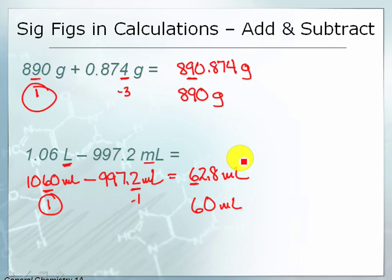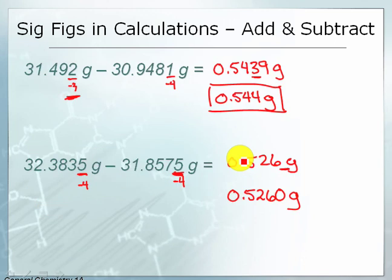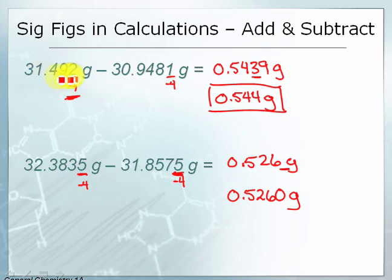So however you go about figuring it out, the big thing to remember in all of these is that the uncertainty in the answer is determined by the largest source of uncertainty going in. The first uncertain digit you come to as you look from left to right becomes the first uncertain digit and the last significant digit.